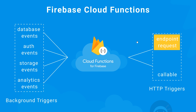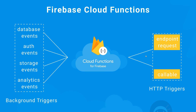In the last lesson we created an HTTP function which fired via a certain URL or endpoint. Now in this lesson we're going to create another HTTP function - this time a callable function which we can call directly from our code.